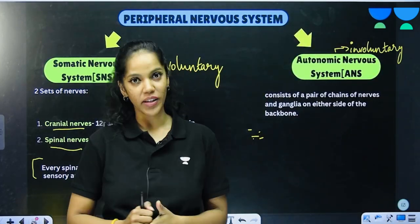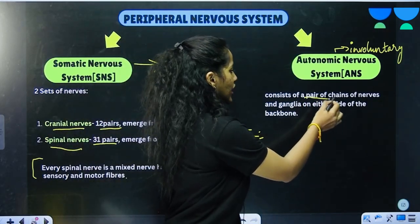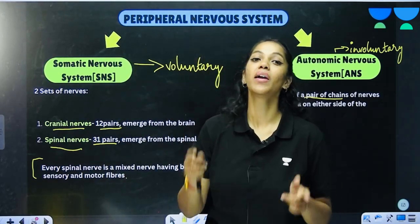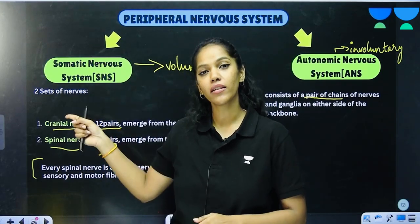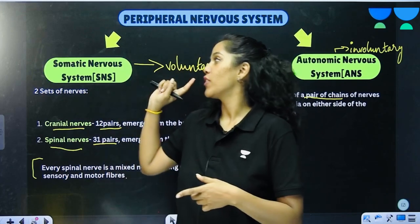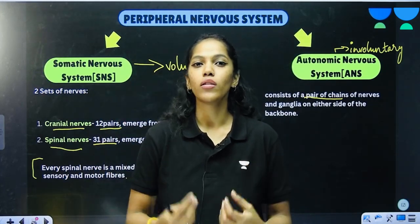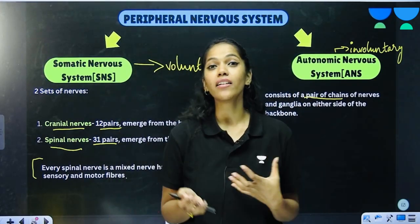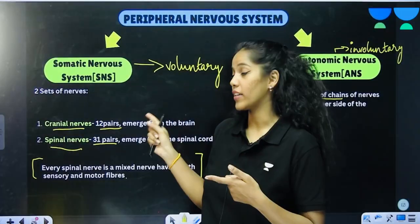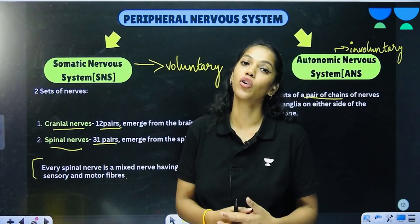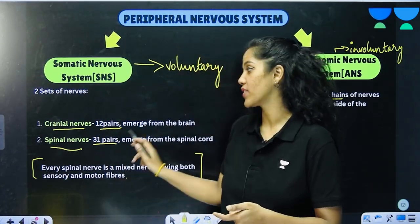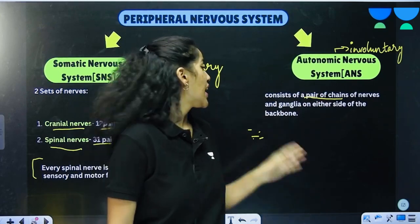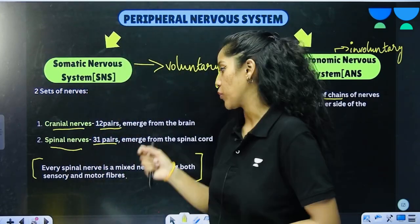The autonomic nervous system consists of a pair of chains of nerves and ganglia on either side of the backbone. To summarize: the peripheral nervous system is divided into the somatic nervous system, responsible for voluntary actions, and the autonomic nervous system, responsible for involuntary actions. The somatic nervous system consists of 12 pairs of cranial nerves and 31 pairs of spinal nerves, while the autonomic nervous system consists of chains of nerves and ganglia on either side of the backbone.